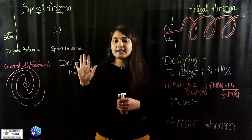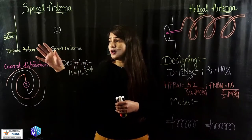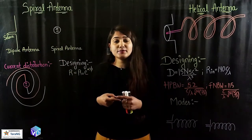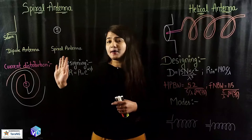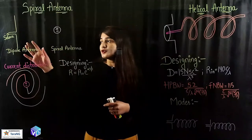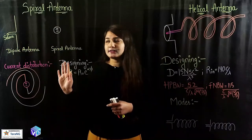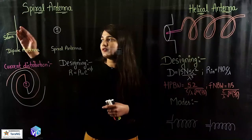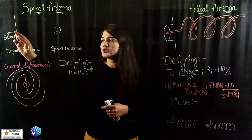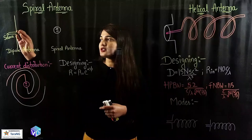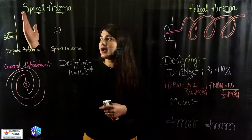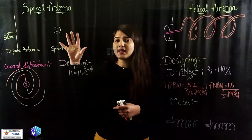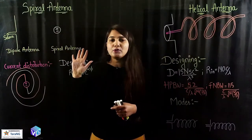First of all, the spiral antenna. We are all familiar with the dipole antenna. If not, you can go and watch the theory as well as the simulation video on the dipole antenna. The dipole antenna looks like this — we have a source, the feed lines are turned, and if I have a two-wire transmission line, it is turned at an angle of 90 degrees. This is my dipole antenna.